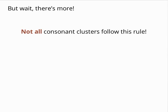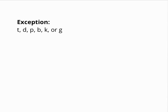There is one type of consonant cluster that does not follow this rule and instead generally stays intact. This type of cluster is made up of the consonants T, D, P, B, K, or G — together called stops, because the airflow must be stopped in order to produce the letter.